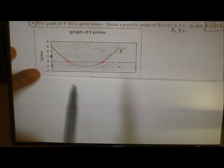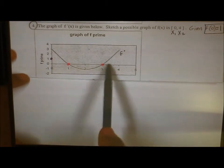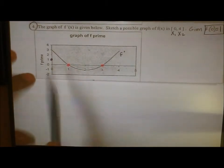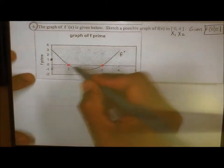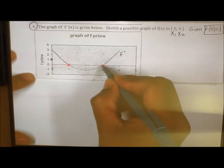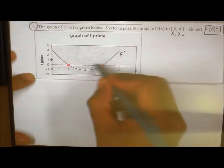And we're going to start off by finding x-intercepts. x-intercepts on f prime mean something special on f. They mean either relative extrema or drag. So I know something special is going to happen at x equals 1 and x equals 3.